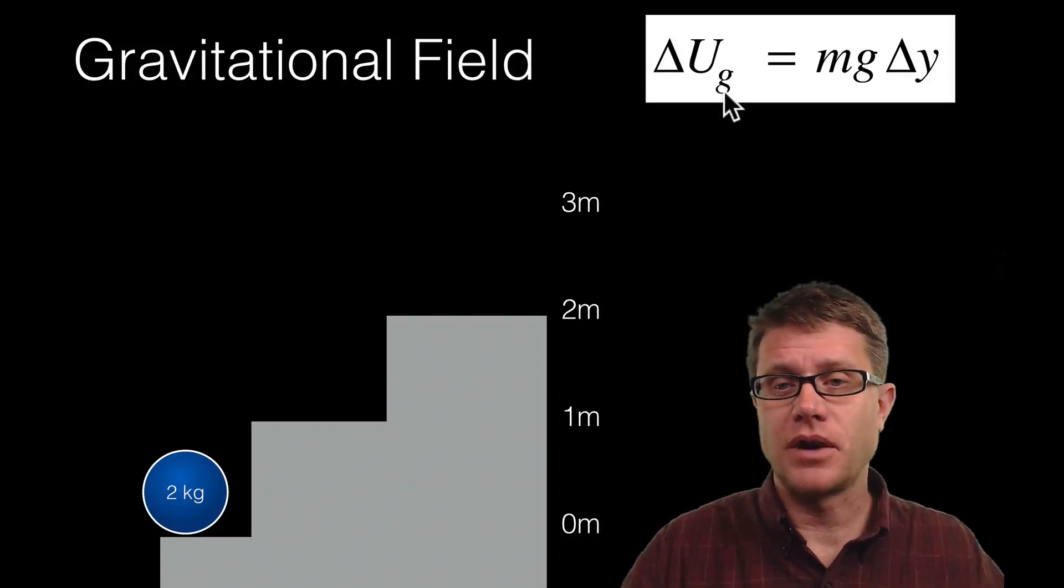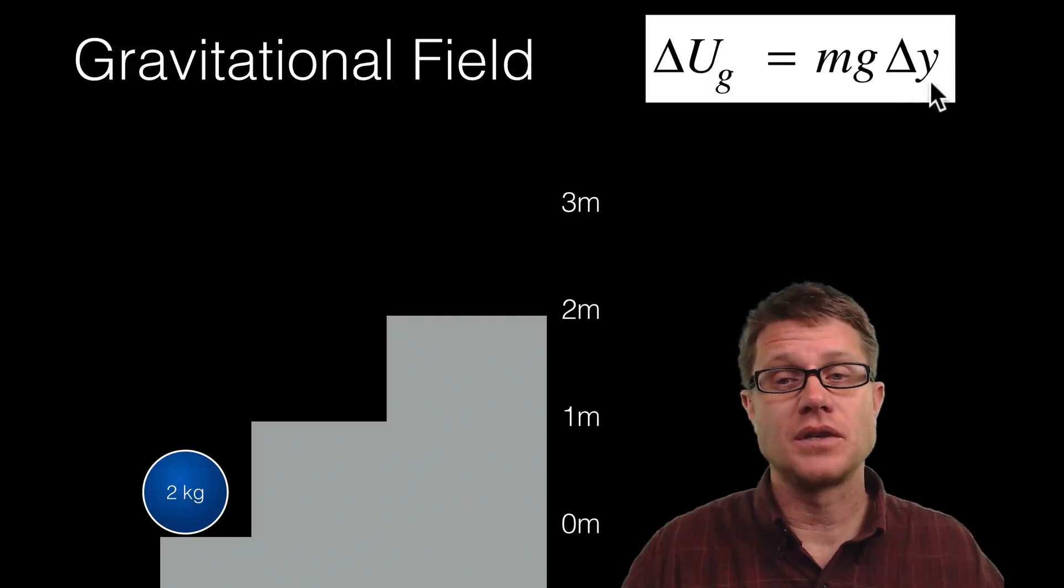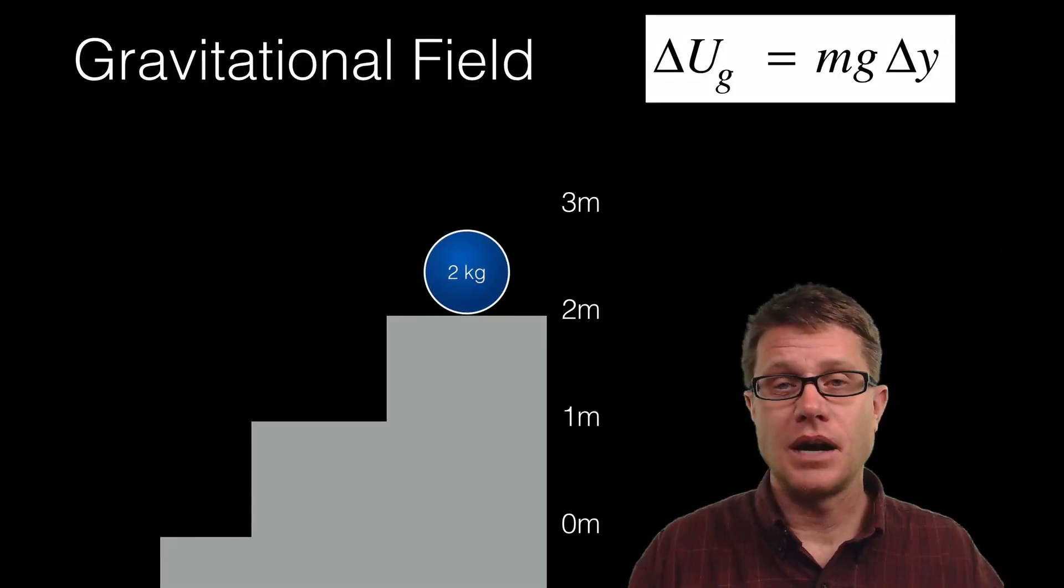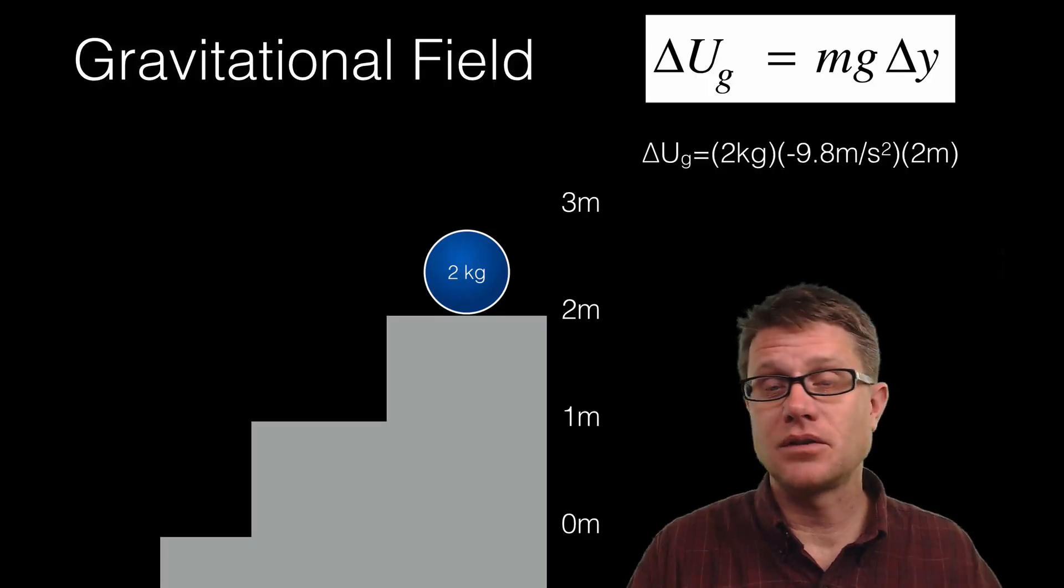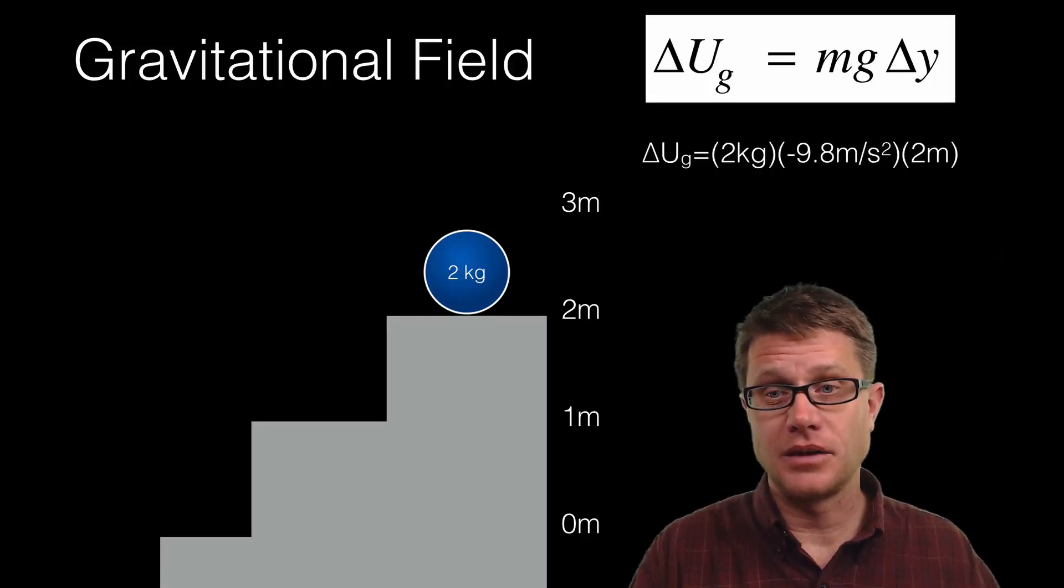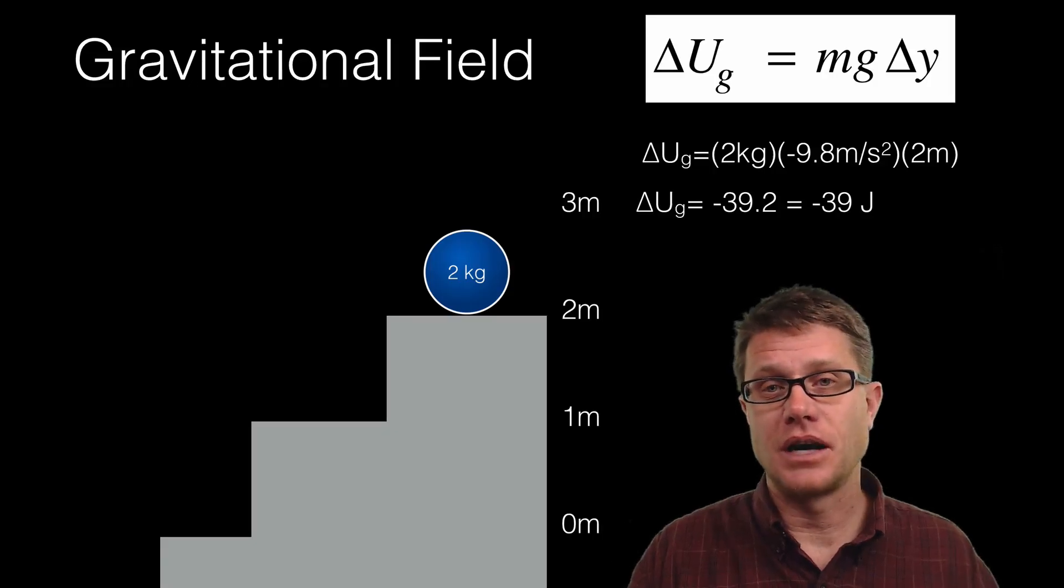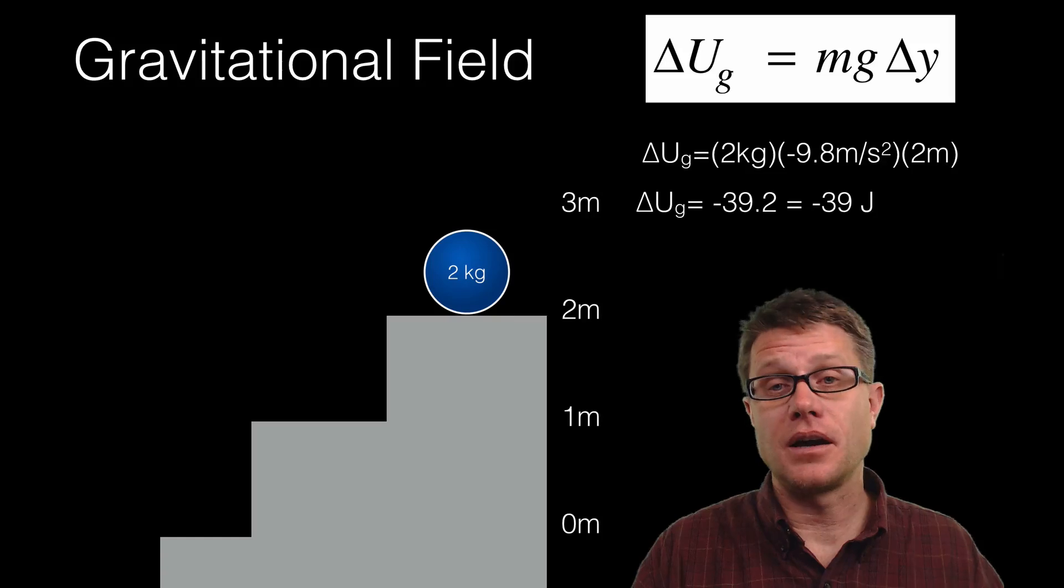Our equation for gravitational potential energy is mg times the change in y, so where we are in that gravitational field. If I take that object and lift it up to 2 meters, how much gravitational potential energy does it have? First I have got the mass, plugging that in. We know the gravitational field strength is negative 9.8 meters per second squared. How far did I lift it? 2 meters. What is the work done on the system? It is negative 39 joules solving for significant digits. So if I were to let it go I am going to get that energy back out of the system. It is conserved.